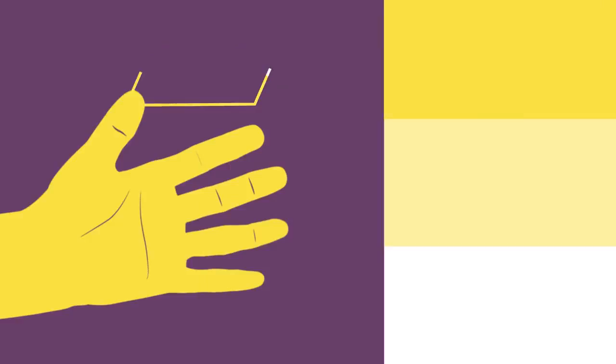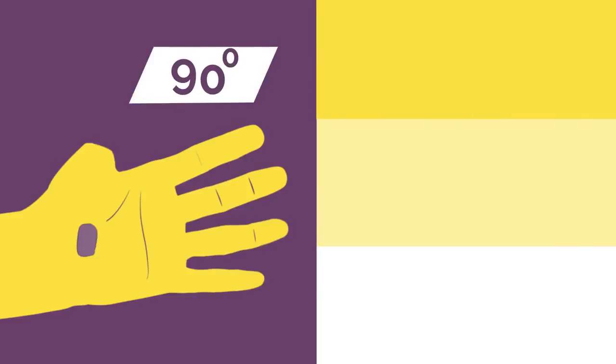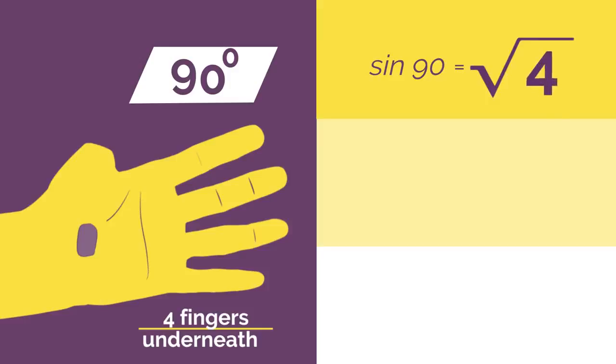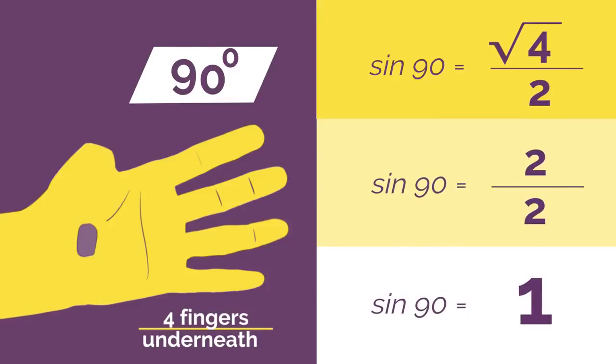If we wanted sine 90 degrees, you'd bend down your 90 degree thumb and so you have four fingers underneath. So sine 90 is square root of 4 divided by 2, which simplifies to 1.